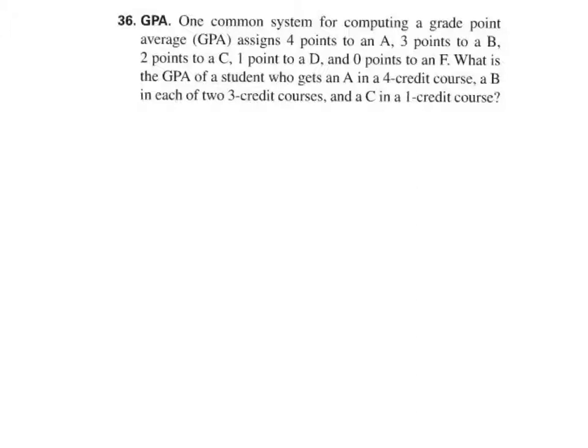So what do we have? What did the student get for grades? We see that A in a four-credit course, a B in two three-credit courses, and a C in a one-credit course. So I'm going to make a table. I'm going to call the first column grade.